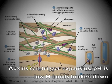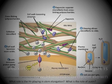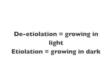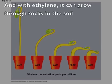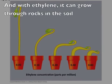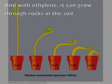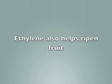Auxins can trigger expansins — pH is low, H-bonds are broken down. Helps plants grow to obtain more light. With ethylene, the plant can grow around rocks in the soil.